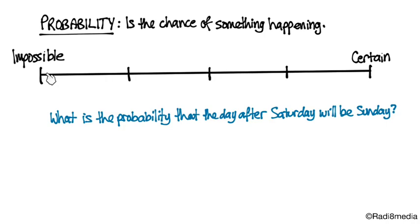You'll see we've got a bit of a scale or a spectrum of probability. At the bottom end here, we've got things that are impossible up to things that are certain to occur.